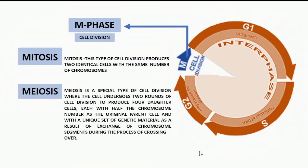Mitosis is a type of cell division that produces two identical cells with the same number of chromosomes. Meiosis is a special type of cell division where the cell undergoes two rounds of cell division to produce four daughter cells, each with half the chromosome number as the original parent cell, and with a unique set of genetic material as a result of exchange of chromosome segments during the process of crossing over.